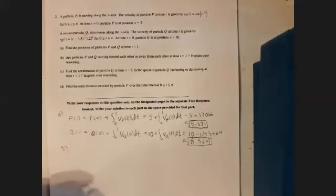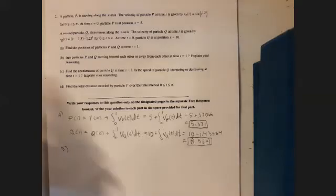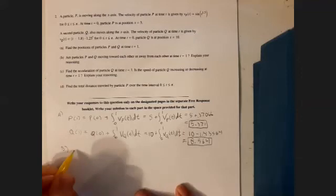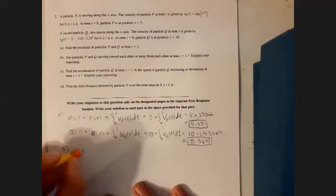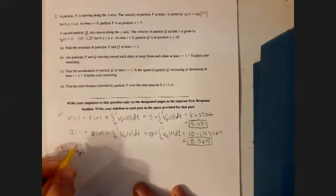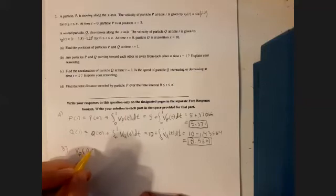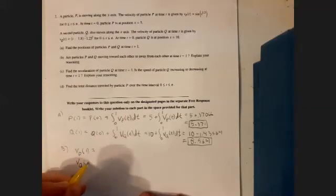Then we can move on to part B. Are particles P and Q moving toward each other or away from each other at time t equals 1? Explain your reasoning. So we have to consider two things. We have to consider where the particles are with relation to one another. I know from part A that particle Q is to the right of particle P. Then I need to figure out which way they're going, which is given by the velocity functions. So v sub Q, the velocity of particle P at 1, and then the velocity of particle Q at 1.